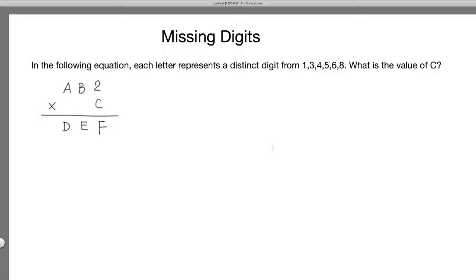The second problem is less trivial. Let's look at this problem. In the following equation, each letter represents a distinct digit from 1, 3, 4, 5, 6, 8. What is the value of C? So the equation says AB2, a 3-digit number, times C equals DEF. And ABC, DEF, six letters. And we have six digits: 1, 3, 4, 5, 6, 8. So they are all distinct, they are all different.